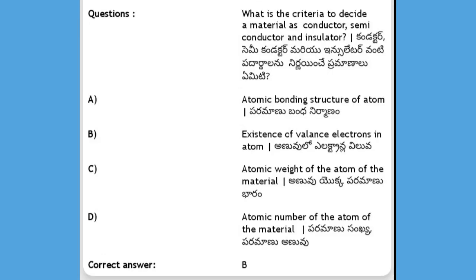What is the criteria to decide a material as conductor, semiconductor, and insulator? Options: atomic bonding structure of the atom, existence of valence electrons in the atom, atomic weight of the atom, atomic number of the atom. The answer is the existence of valence electrons in the atom.